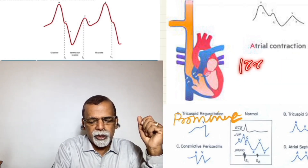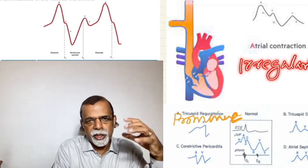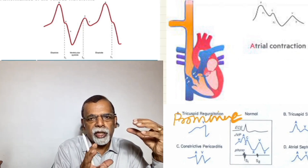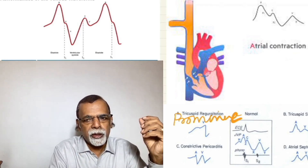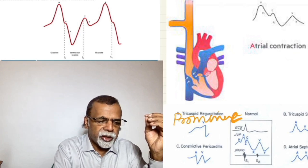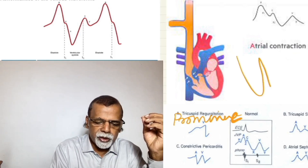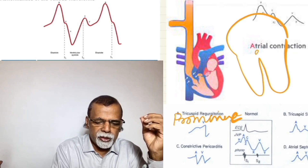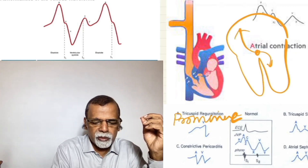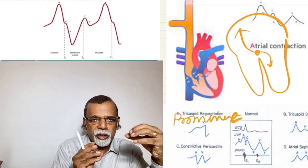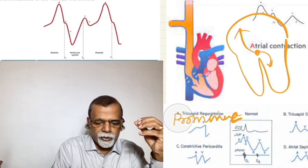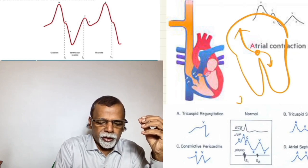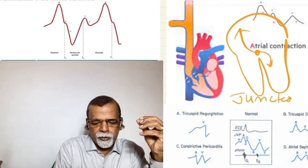In complete heart block, these cannon waves are irregular, because the co-contraction occurs by chance. The atrium may contract at around 72 per minute and the ventricle at 40-50 per minute, and when they co-contract it produces a giant A wave — a cannon wave. Another condition where you can get a cannon wave is junctional rhythm. In junctional rhythm, the impulse arises from the junction, stimulates both the atria and the ventricle simultaneously, so at each contraction the atrium and ventricle are co-contracting, producing regular cannon waves.